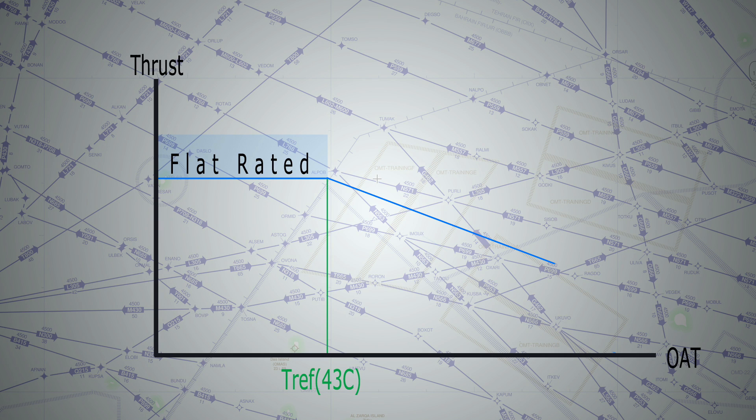T ref is a temperature value at which, if the temperature is above, the engine will produce less and less thrust. However, any temperature below T ref, the engine will produce the same amount of thrust, in this case maximum thrust or TOGA thrust. Now let's see how does that relate to us in our everyday operations.